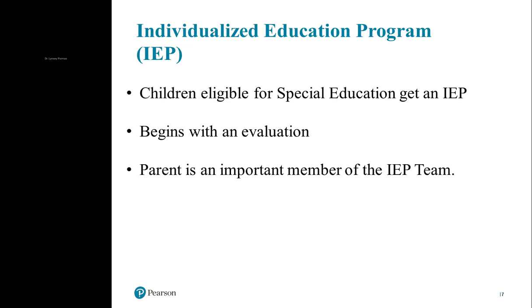The IEP is more than just a written legal document — it's truly intended to be a roadmap that lays out special education programming, supports, and services that kids need to make progress and thrive in school. It begins with an evaluation, which was likely school-based, and an outside private evaluation or IEE can help assist with determining whether a child will get an IEP. Importantly, your report does not automatically qualify a child for special education — you need to demonstrate educational need.